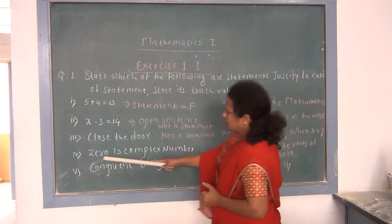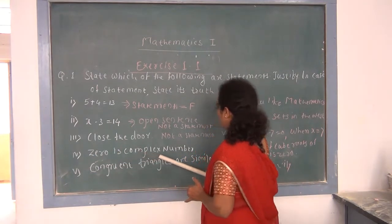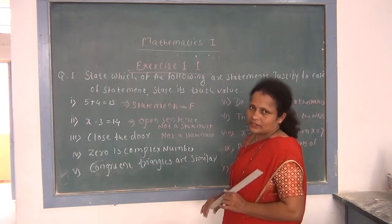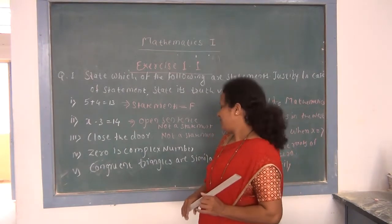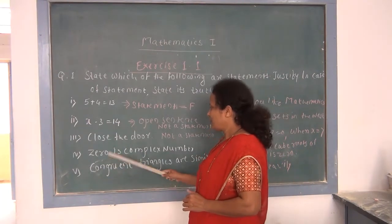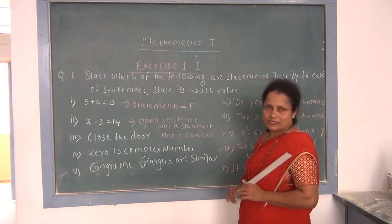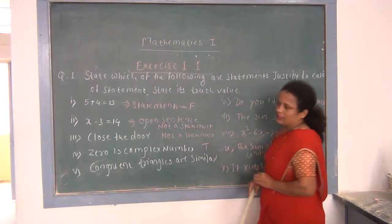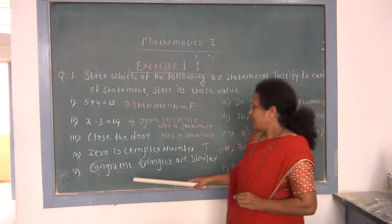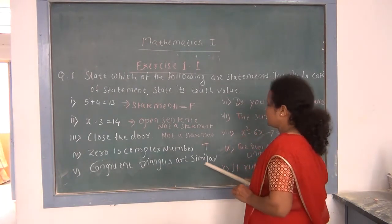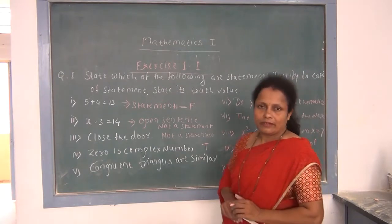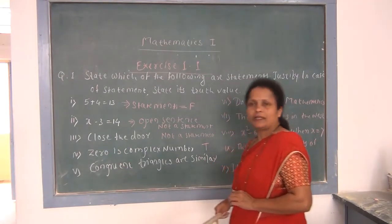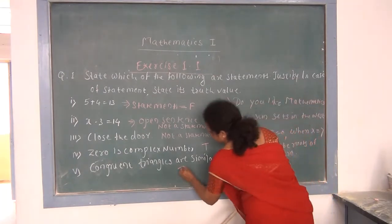Fourth: '0 is a complex number.' This sentence definitely tells us true or false — it is a declarative sentence, and 0 is indeed a complex number, so this is a statement and its truth value is T. Fifth: 'Congruent triangles are similar.' This is also a declarative sentence, so it is a statement and its truth value is T.